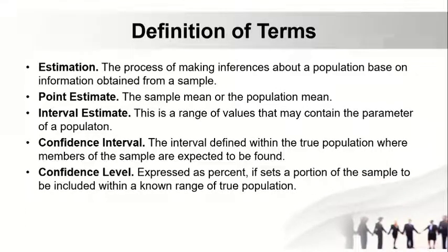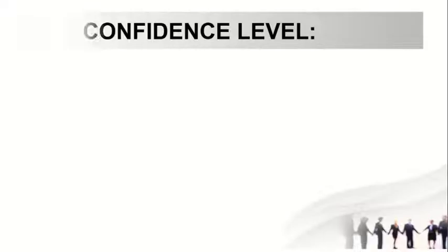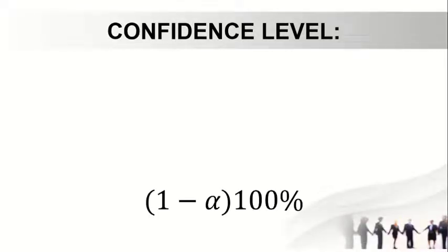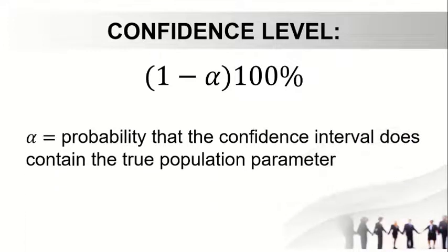Confidence level: expressed as a percent, it sets a portion of the sample to be included within a known range of true populations. Critical value: the value that indicates the point beyond which true population parameter. The confidence level formula is 1 minus alpha, all multiplied to 100 percent, where alpha is the probability that the confidence interval does not contain the true population parameter.